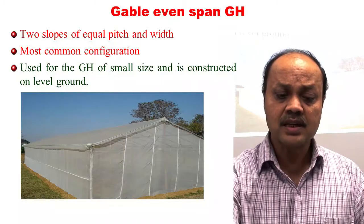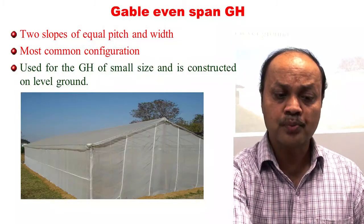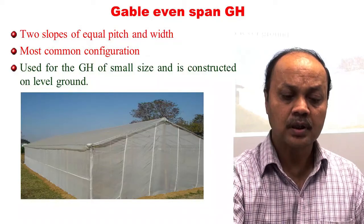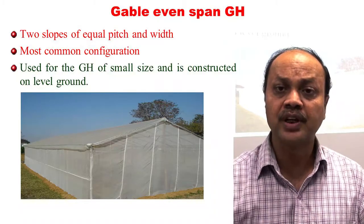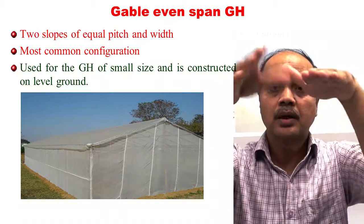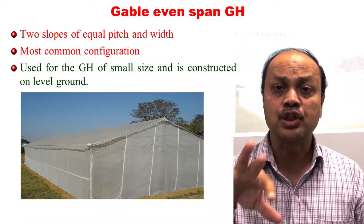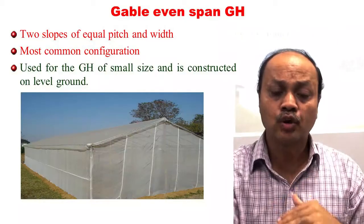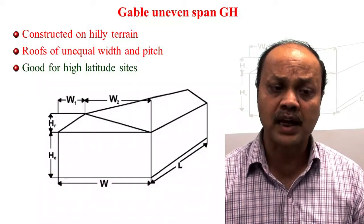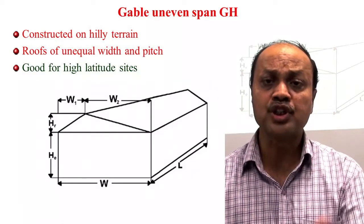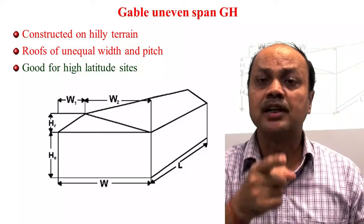The modified Quonset or arc-type greenhouse has a semicircular upper section with a vertical side portion, commonly used for tomato and cucumber. The gable or even-span greenhouse has two slopes of equal pitch and width, meaning the angle the roof makes from horizontal is equal on both sides. This is a very common configuration.